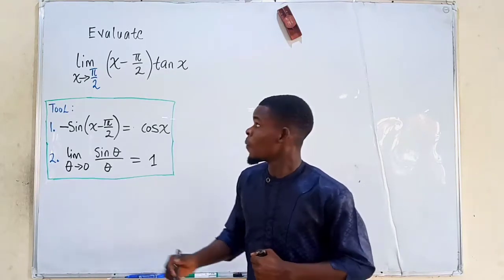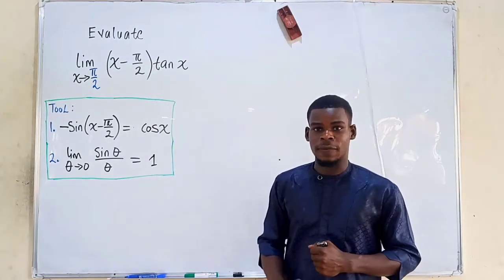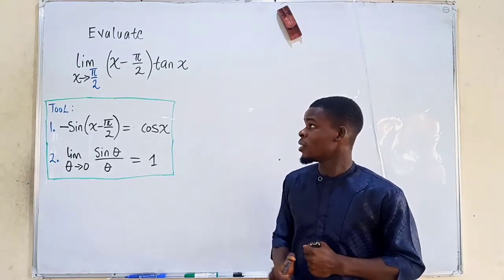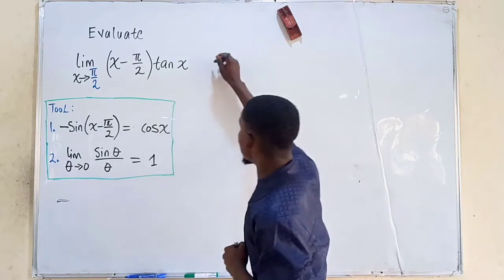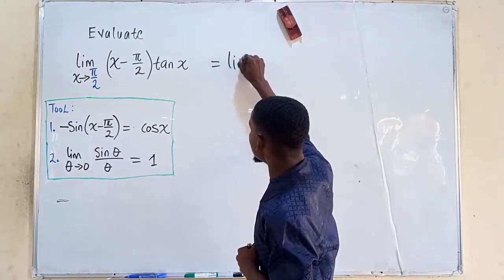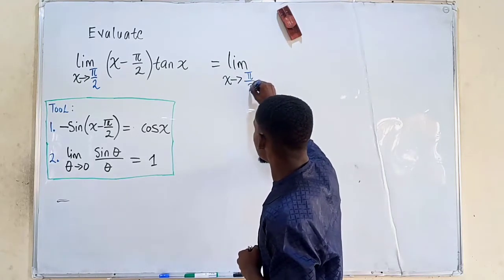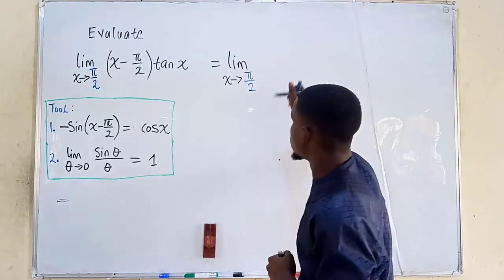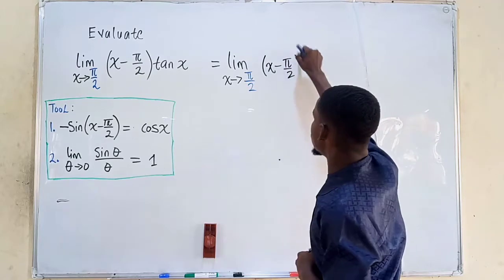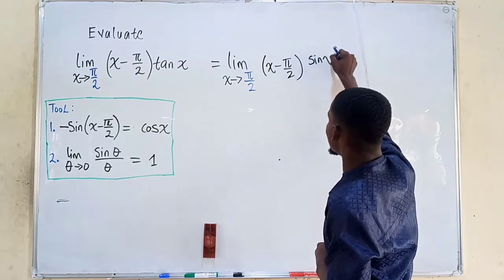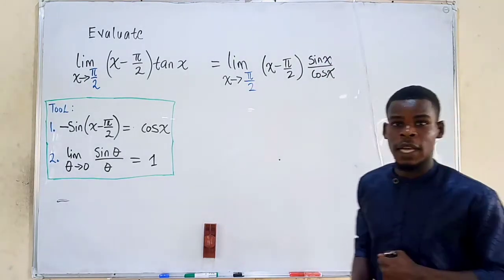Let's go ahead and evaluate this limit using those tools. I'll first rewrite the function by expressing tangent of x using the trig identity in terms of sine and cosine. So this becomes the limit as x tends to π/2 of (x minus π/2) times sine of x divided by cosine of x.